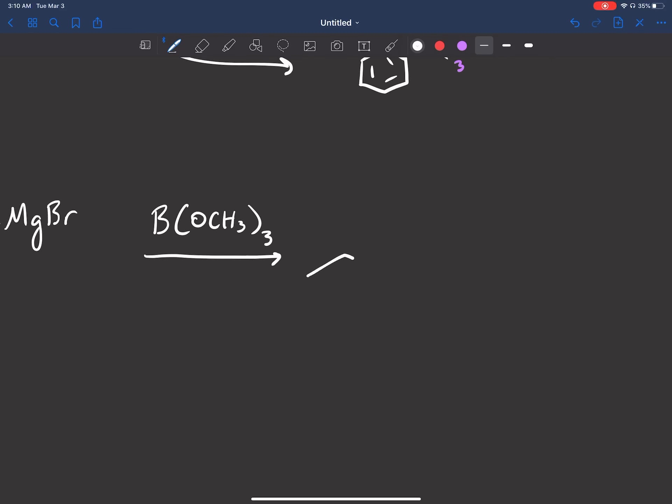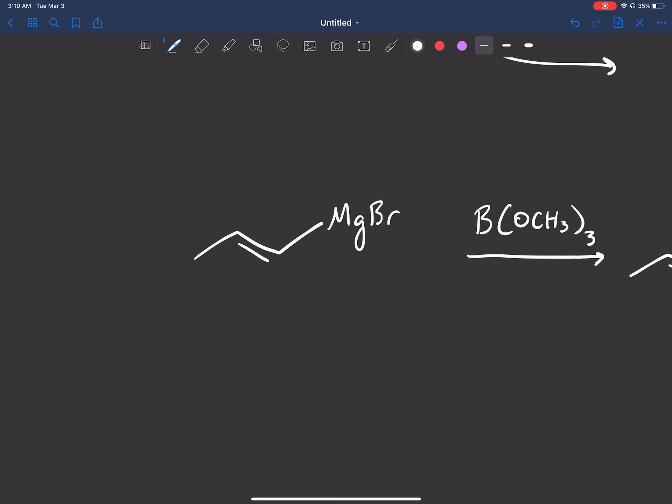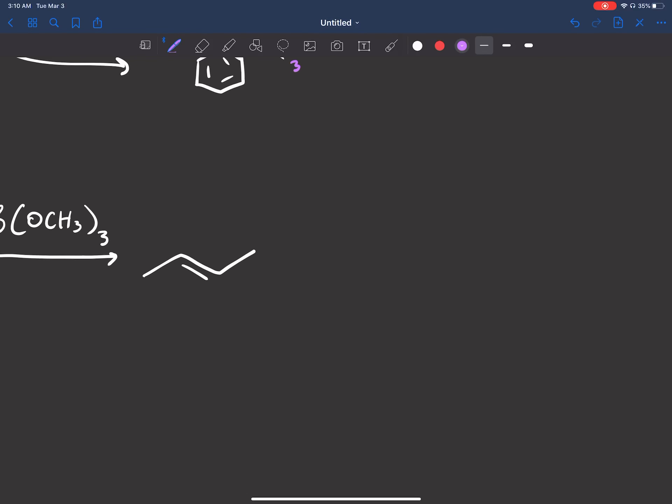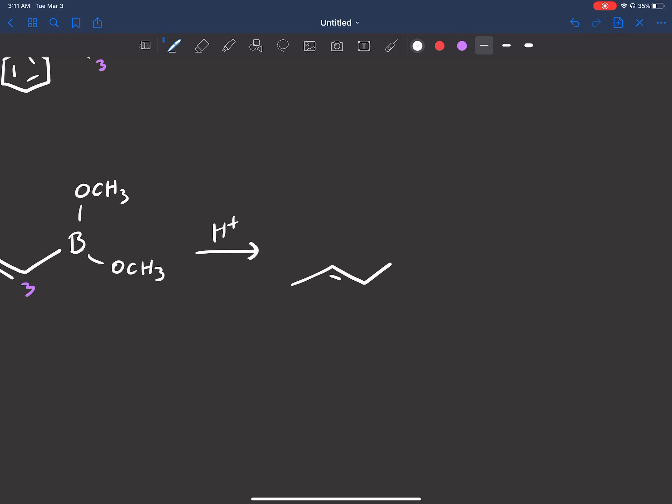And what we would get is this compound. Let's number our carbons: one, two, three. One, two, three. OCH3, boron binds to carbon-3, OCH3, OCH3. Then we add the H+ again and we get our boronic acid.